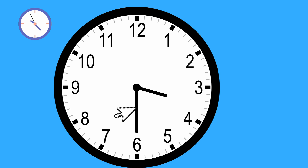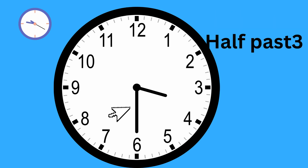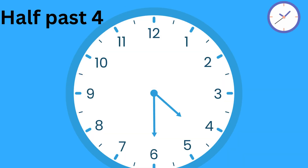Again, when the long hand is pointing at six, we say it is half past. The time on this clock is half past three. Now, the time says half past four.